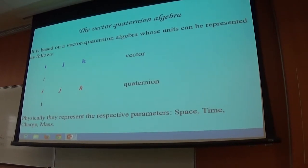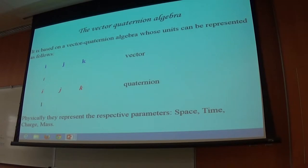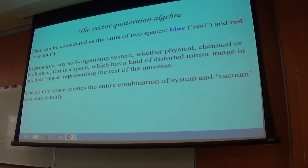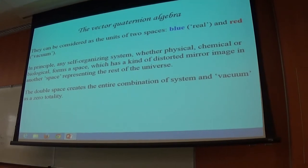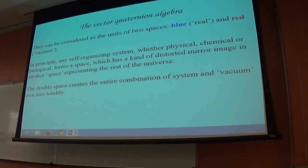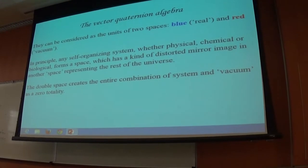It doesn't have to be physics — it could be biology or chemistry. These are two units of two spaces: the blue one and the red one. The blue one is like what we might call ordinary space, real space. The red one is everything else — vacuum, whatever you want to call it.